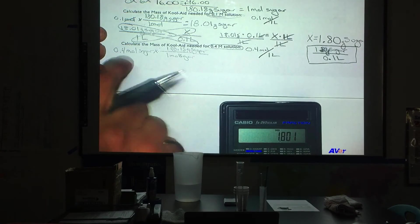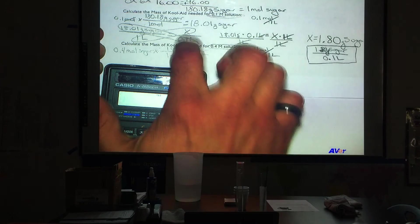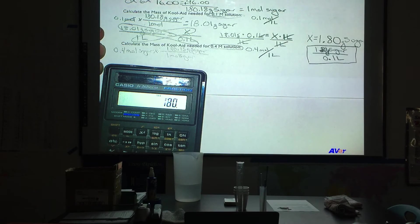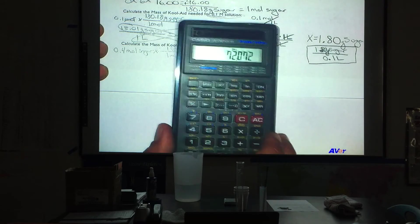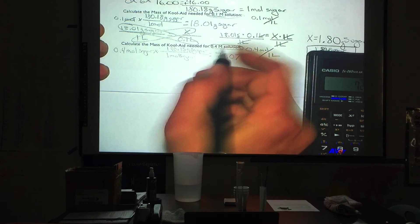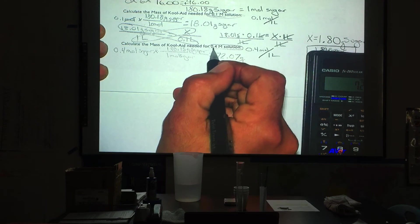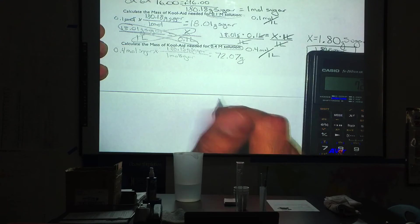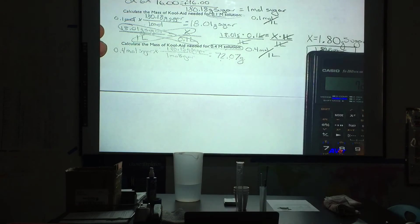This will tell us how much 0.4 moles would weigh. And that is how much we would be in a liter. So we will say 0.4 times 180.18 equals 72.072, which we will say 72.07. This is how many grams we would put in one liter of a 0.4 molar solution. It is going to have a higher concentration. This should be sweeter because there is more sugar in it. Now we don't want to make a whole liter.